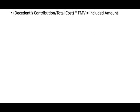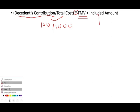The inclusion formula is: decedent's contribution divided by total cost, multiplied by the fair market value of the annuity. So what is your ownership level based on how much you contributed? For example, if you contributed $100 and the total cost was $1,000, you contributed 10%. Then you multiply that 10% by the fair market value of the annuity — that's the amount you include.